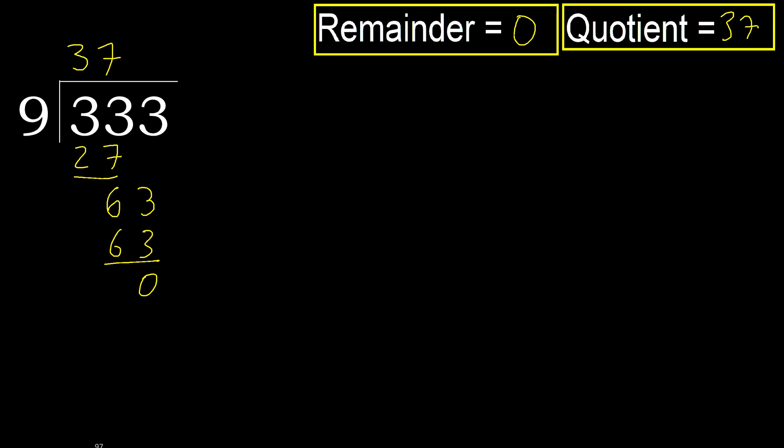333 divided by 9 is 37. Ok. Next: 333 divided by 100.